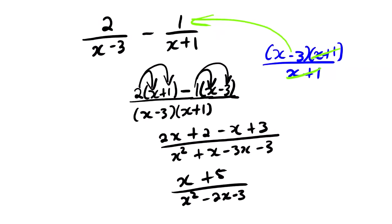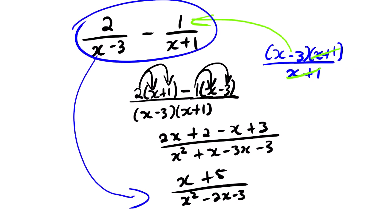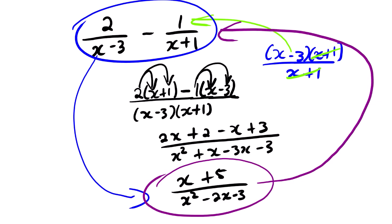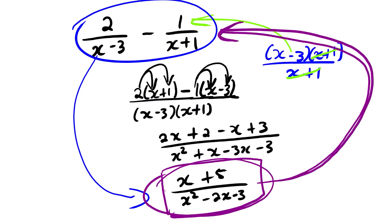We can see that the difference of the two fractions equals this result. Now, partial fraction decomposition is where we take this answer and reverse it back to the original two fractions. We take the simplified result and find the two or three fractions which were combined to give that answer. That is basically what partial fraction decomposition is. Let us start with the first example.